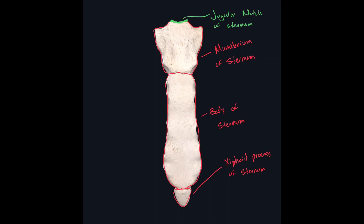Just lateral on both sides of the jugular notch, we have another notch. These notches are called clavicular notches. The sternal extremity of the clavicle articulates with the clavicular notch of the sternum — it's all tying together now. Working our way down inferior from the manubrium towards the xiphoid process, we have these notches all the way down to the bottom part of the body of the sternum. Each one of these notches that receives the costal cartilage of a true rib is called a costal notch of the sternum.